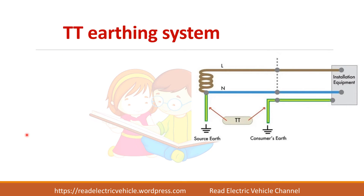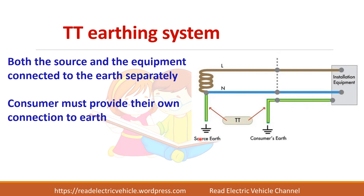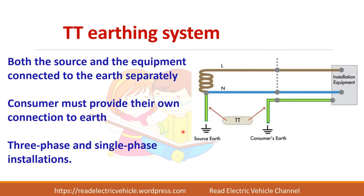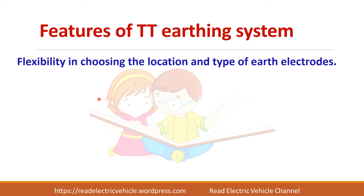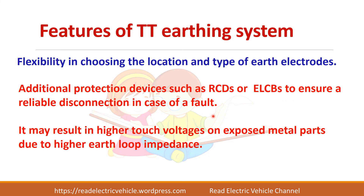In the TT earthing system, both letters T mean direct connection to the earth — the source is connected to earth and the consumer is also connected to earth. Sometimes the consumer has to provide their own earth connection, as it may not be provided by the distributor. This is normally preferred for single-phase and three-phase installations. The TT system offers flexibility in choosing the location and type of earth electrode, but a major drawback is the need to install protection devices like an RCD or ELCB, and it may result in higher touch voltage.